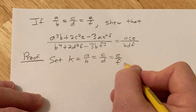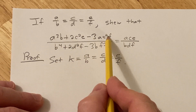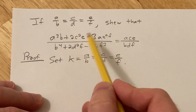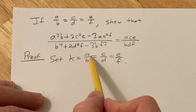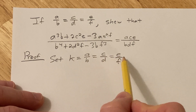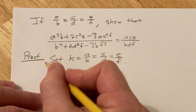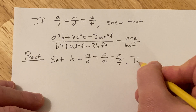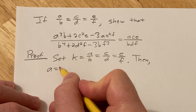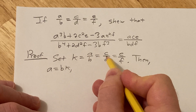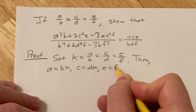Then we need to show this is true. What I'm going to do is rewrite the numerator — we want to express the numerator using other variables. So let's take each of these and solve for the numerator. Solve for A, solve for C, solve for E. To solve for A we have K equals A over B, so multiply by B — A equals B times K. C equals D times K, just multiply by D. E equals F times K.